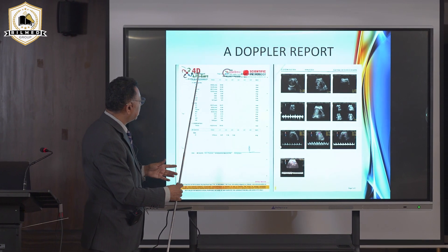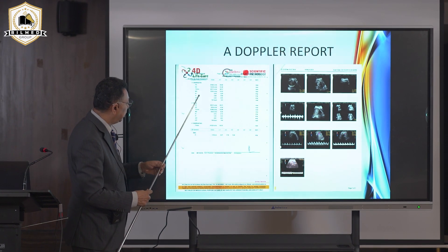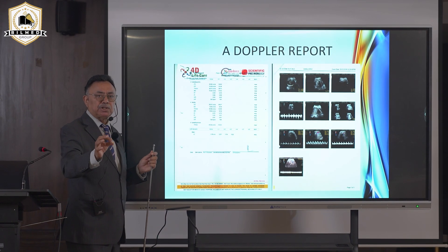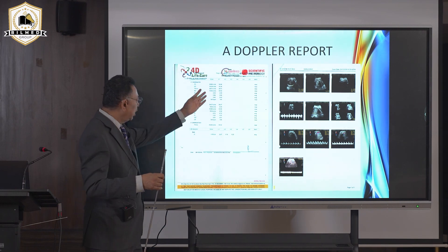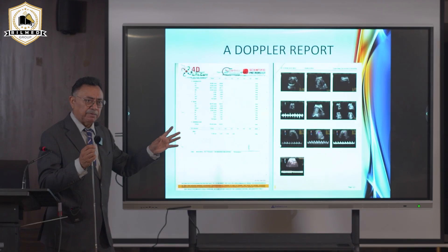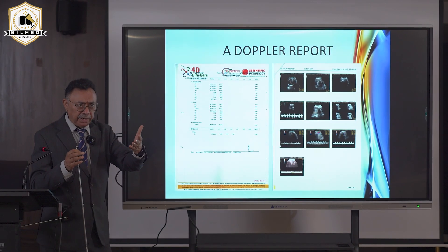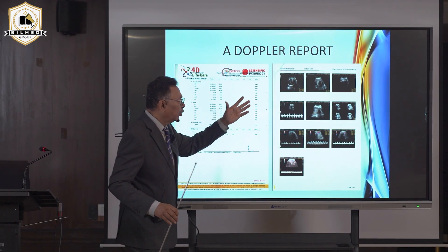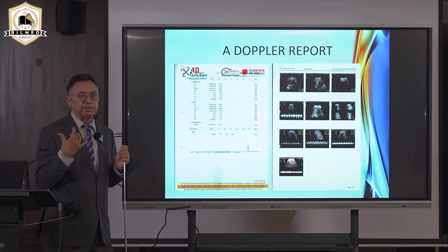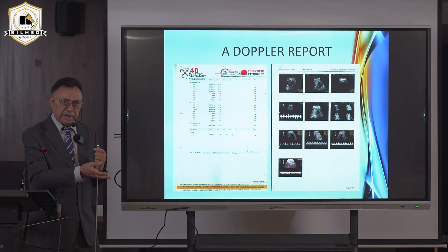A classical Doppler report shows PS, ED, T-max, MD, RI, PI, SD, and heart rate for all vessels. Ninety percent of gynecologists do not look at this report because they have never been taught how to interpret it — trained only in delivery techniques like vacuum, forceps, and cesarean. We also do not look at the waveform pictures because we have never done Doppler ourselves.